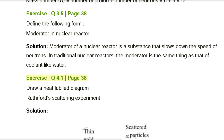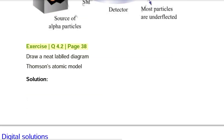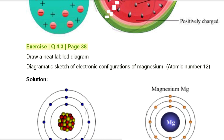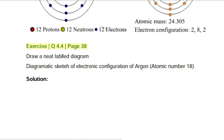Exercise Q4.1, page 38: Draw a neat lab diagram — Rutherford's scattering experiment. Exercise Q4.2, page 38: Draw a neat lab diagram — Thomson's atomic model. Exercise Q4.3, page 38: Draw a neat lab diagram — diagrammatic sketch of electronic configuration of magnesium, atomic number 12. Exercise Q4.4, page 38: Draw a neat lab diagram — diagrammatic sketch of electronic configuration of argon, atomic number 18.